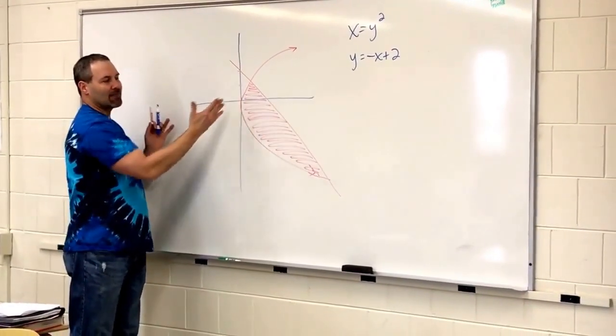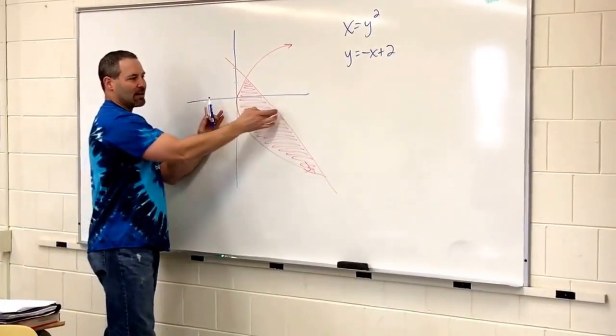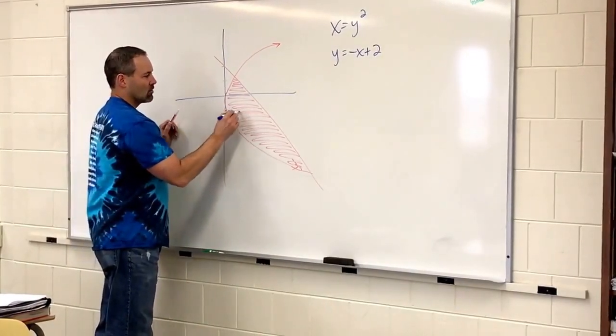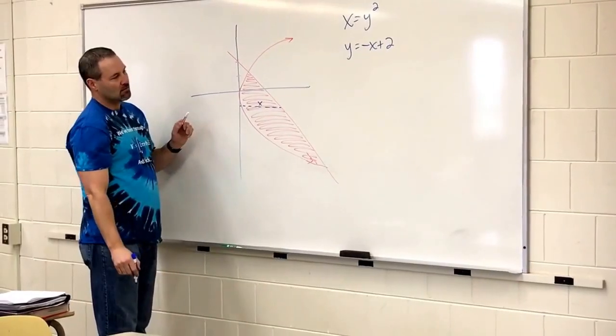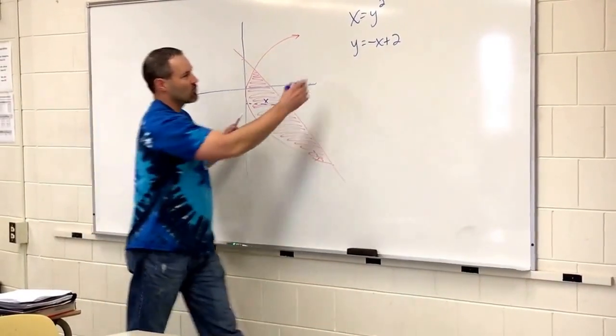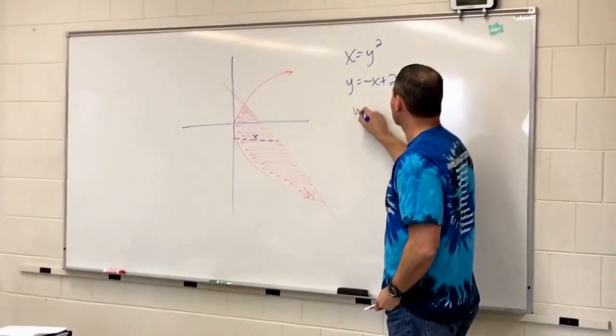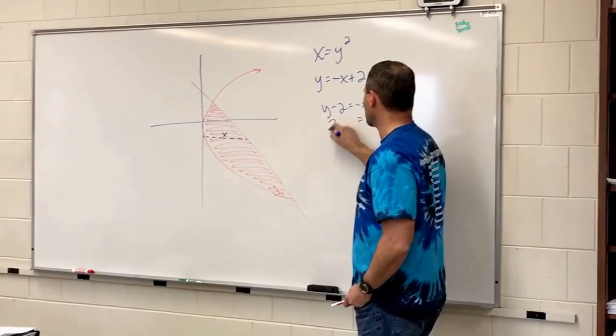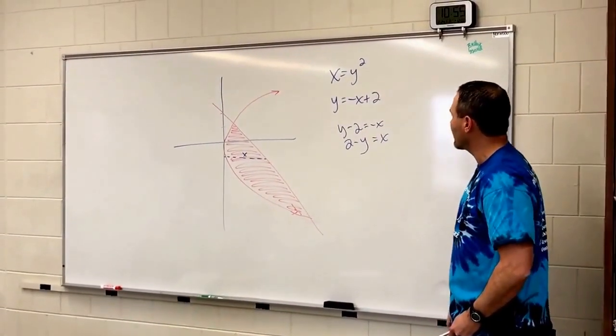Okay? So, if we're going to do right minus left, we're going to integrate with respect to y, because we're doing that x minus this x. Okay? So, we're trying to find out what that x is. So, that's y equals negative x plus 2, so we could solve for x.